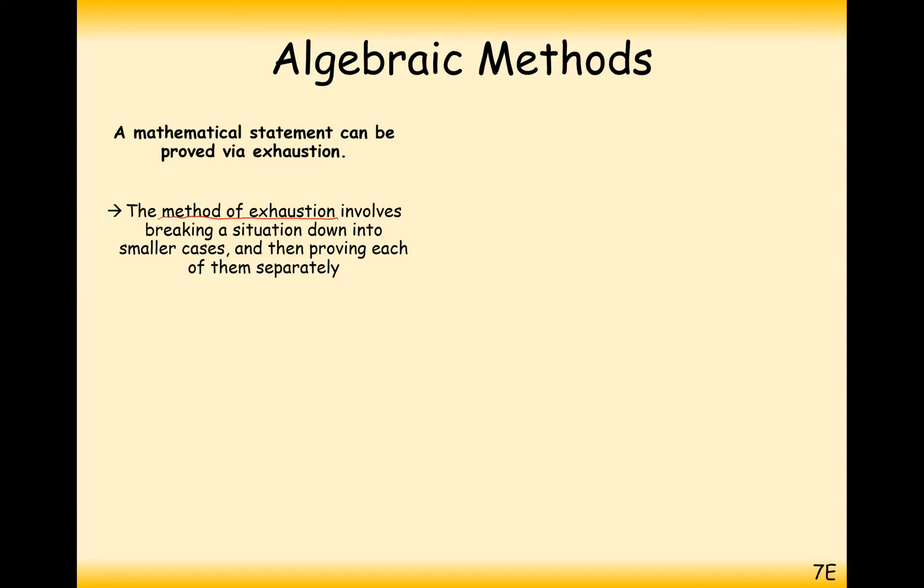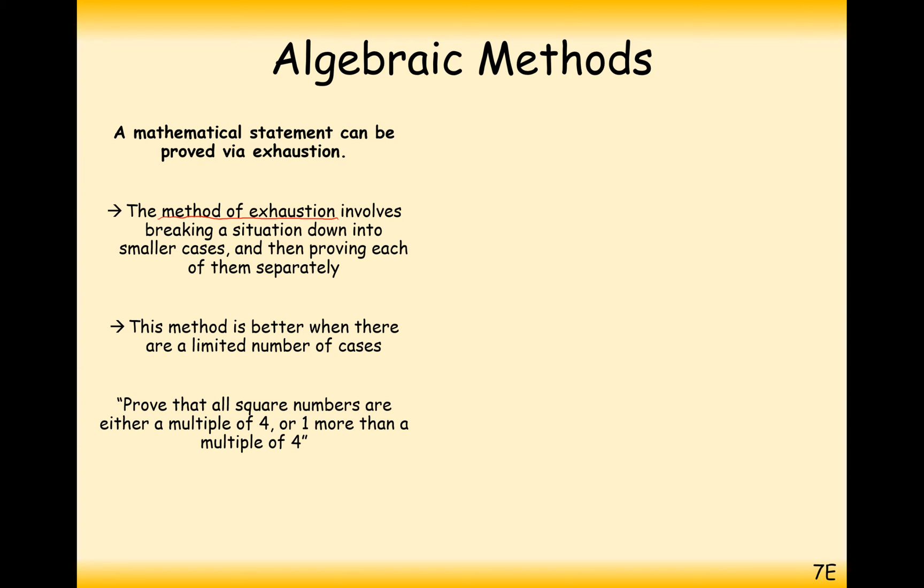So what we're going to do is we're going to split a certain proof up into a couple of different scenarios and hence show that this theorem works for all of the different scenarios, so hence the theorem works. This method is good, but there are a limited number of cases in which we can apply it. And in this case here, in this question down below, we can apply it. Prove that all the square numbers are either a multiple of 4 or one more than a multiple of 4.